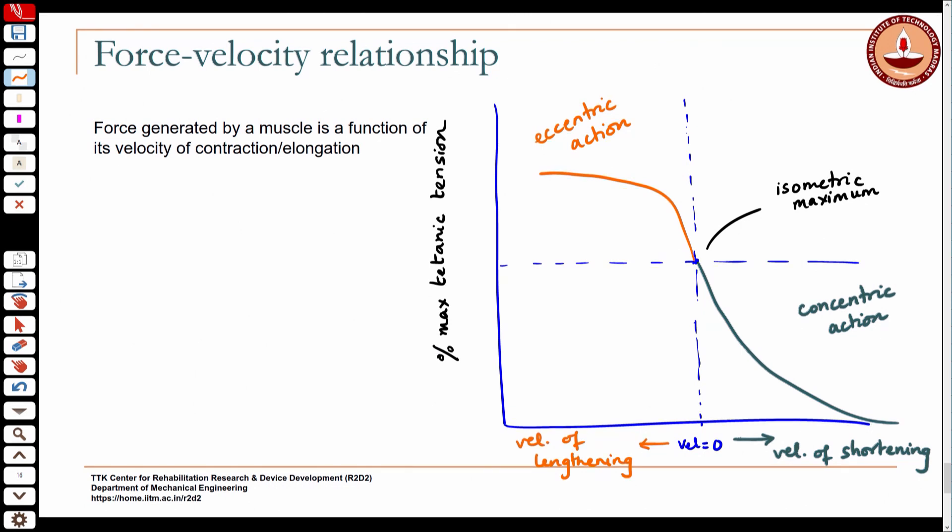The flattening also has to do with the passive elastic components, which are viscoelastic. As velocity increases, they also start producing greater resistance to the lengthening. This relationship is called the force-velocity relationship, and it shows reduced force generation capacity at higher velocities of contraction.